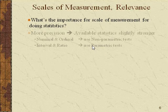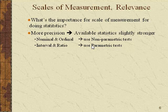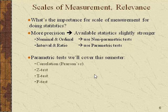What's the relevance of scales of measurement? The more precision you have — the higher the level — the more statistics are available. The big break is this: if you have nominal or ordinal level data, you'll use non-parametric statistics. If it's at the interval or ratio level, you use parametric statistics. This semester we'll cover correlations like Pearson's R, the Z test, the T test, and the F test — all examples of parametric tests.